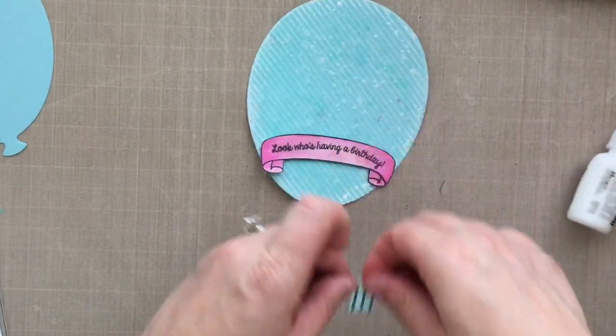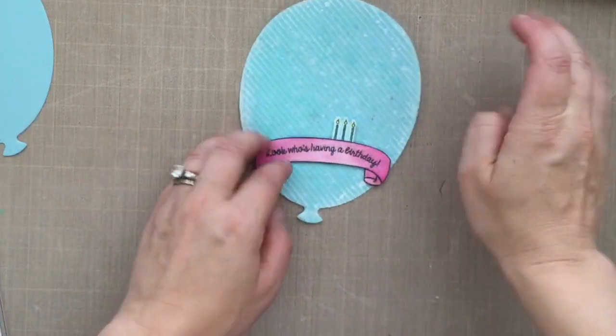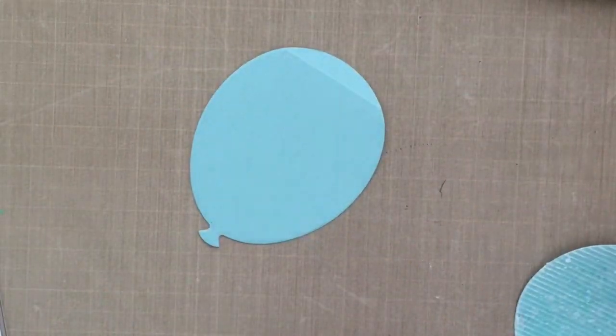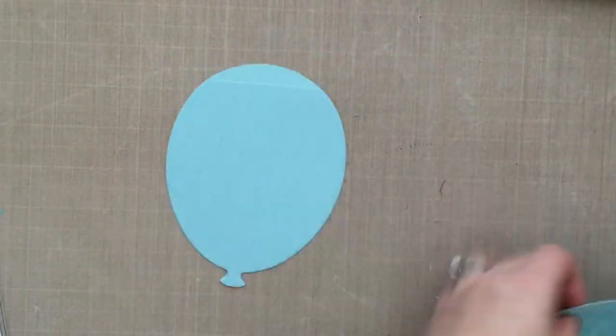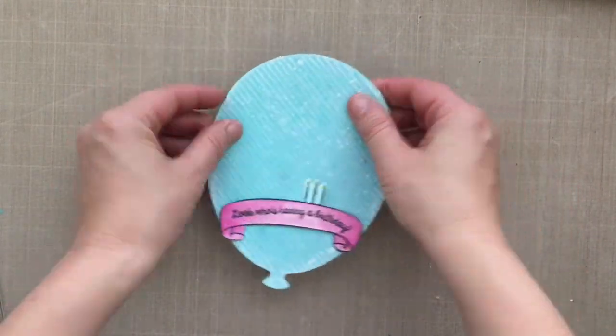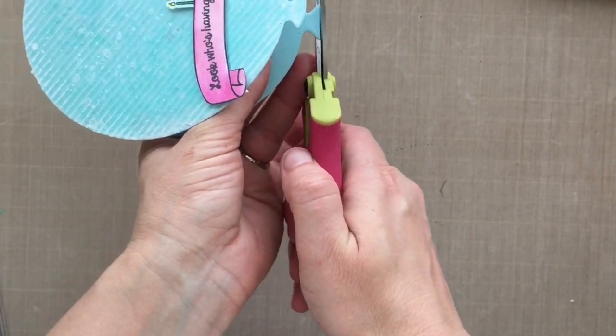I'm going to add some multi-mat medium to the bottom front part of the candle here. This stuff is awesome. It's super strong. You don't need a lot, and it dries completely matte. So if you have any that oozes out the sides or the top or whatever, it's completely matte. You won't be able to see it. I'm going to add some adhesive to the top of that score line there, and then I'm going to line up my balloon here. And that's going to give us the fold for the back of the card.